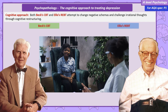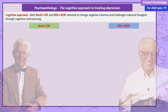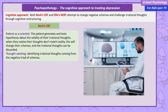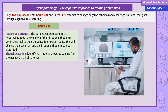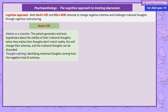Beck's CBT treats the patient as a scientist. This means the patient generates and tests hypotheses about the validity of their irrational thoughts. The hope is that when they realise their thoughts don't match reality, this will change their schemas and the irrational thoughts can be discarded. To go through this process, clients are first taught how to gather data through thought catching — identifying irrational thoughts coming from the negative triad of schemas. To do this they are assigned a homework task of keeping a diary, which is used to record negative thoughts but also identify situations that could cause negative thinking.